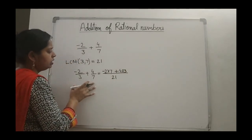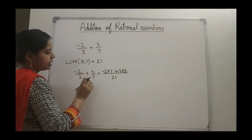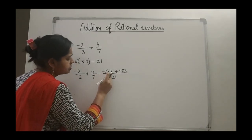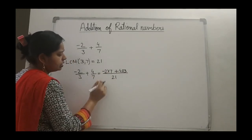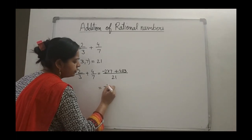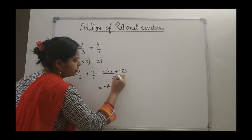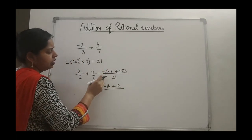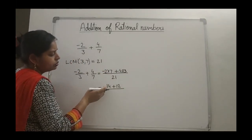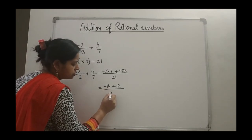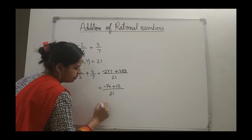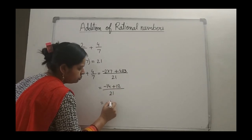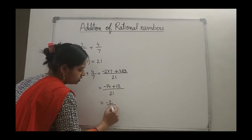The same process we follow as in fraction addition. Now see what you got: 7 into minus 2 is minus 14, and 4 times 3 is 12. In the numerator you have to follow the rules of integers also — that is the combination. Minus 14 plus 12 gives you minus 2 upon 21. This will be your answer.